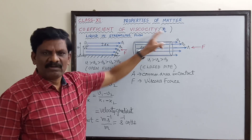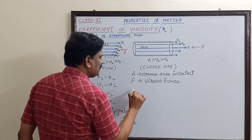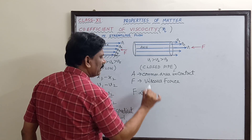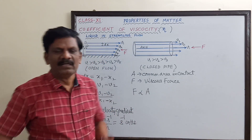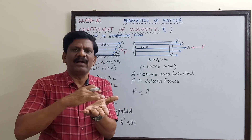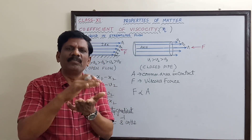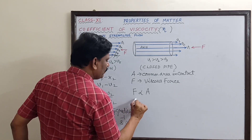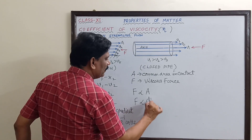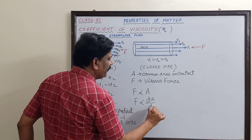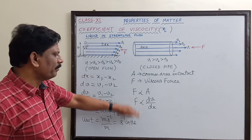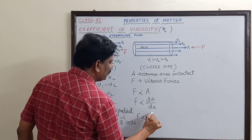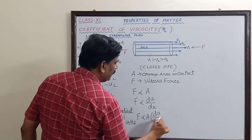We want to get an expression for eta. The viscous force is proportional to the common area of contact — if a large area is in contact, the opposition will be very large — and also directly proportional to the velocity gradient dv/dx. Combining: F ∝ A · (dv/dx).